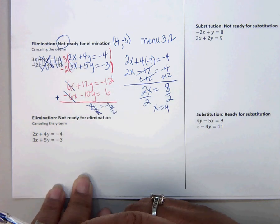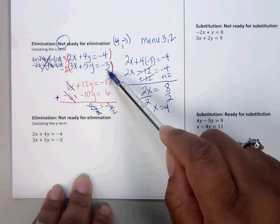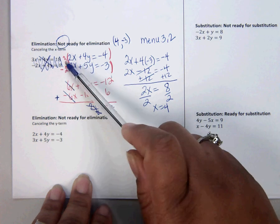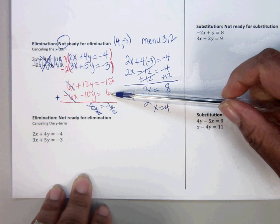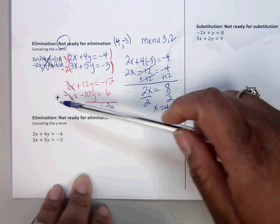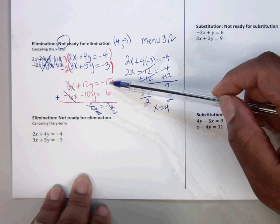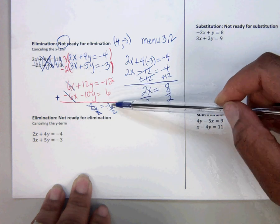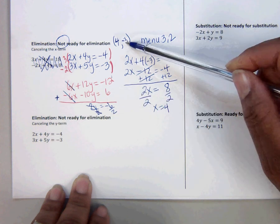Multiply to each one. Multiply to each one. It gives you these two equations here. Cancel the x term. Gives you 2y. Add this together. Gives you negative 6. Divide by 2.